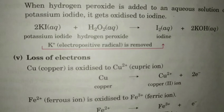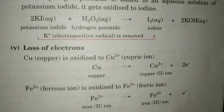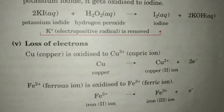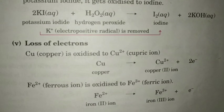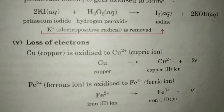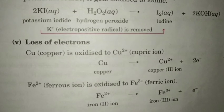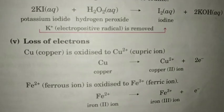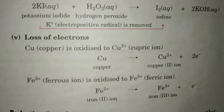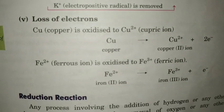Loss of electrons is also oxidation. Copper is oxidized to Cu2+, that is cupric ion. And Fe2+, that is ferrous ion, is oxidized to Fe3+ by losing one electron. So this is all about oxidation reactions.